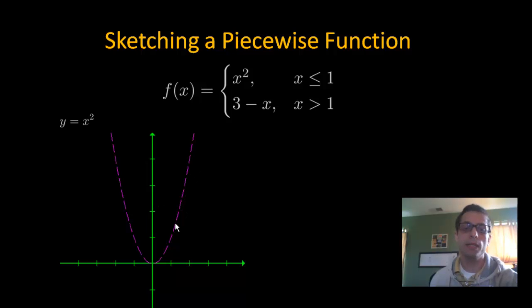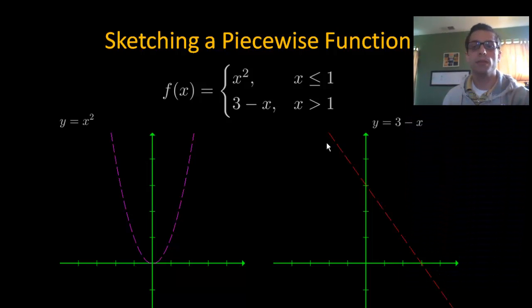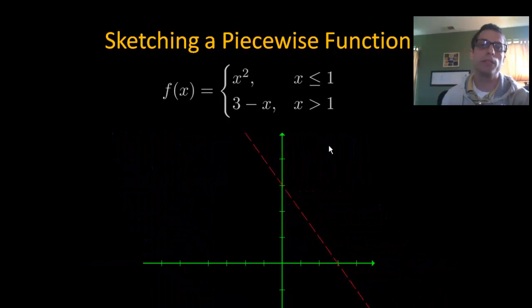Now, notice I did do it dotted. I did this for a reason. I'll explain it in a little bit. And then the graph of 3 minus x, which is this diagonal line right here. Now, after I know how to graph these, what I'm going to do is I'm going to graph them on the same graph. Let's go ahead and do that now.